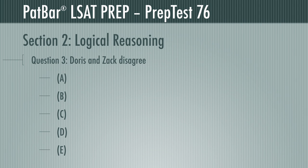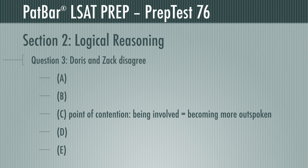Question 3 presents two people making an argument and posits over what do they disagree. Think about the crux of each argument. Doris believes students should get involved in student government if, as she puts it, we want them to be more outspoken. Zach believes being outspoken is precisely why those in student government are already there. This is the point of contention, and C is correct.